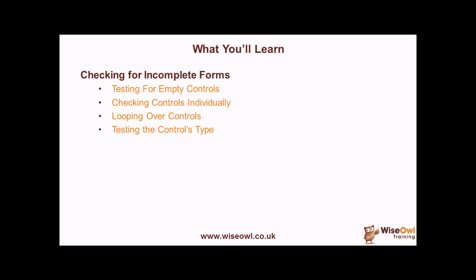When we're looping over all the controls, we need to make sure we can separate out the controls that have values from the ones that don't — we need to separate out text boxes from labels, for instance. So we'll also show you how you can test what type of control you're looking at. There's lots of detail to cover here, so let's get started.